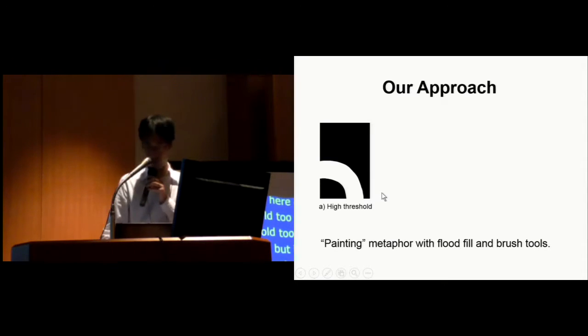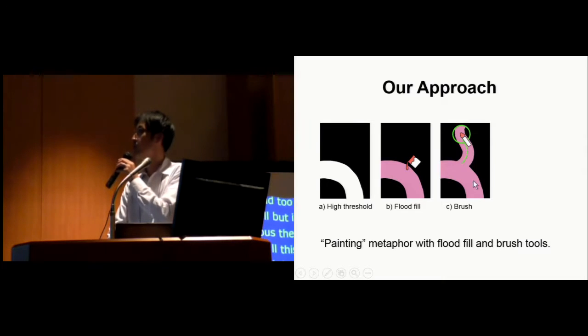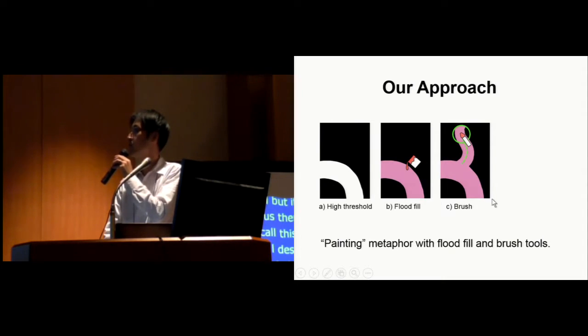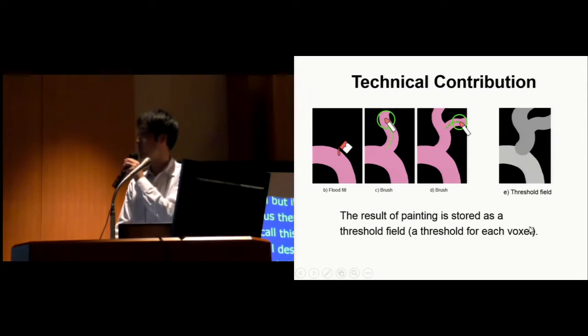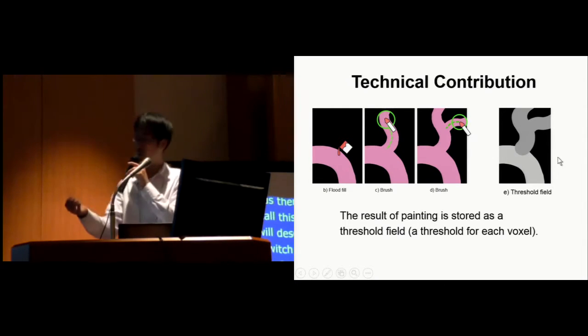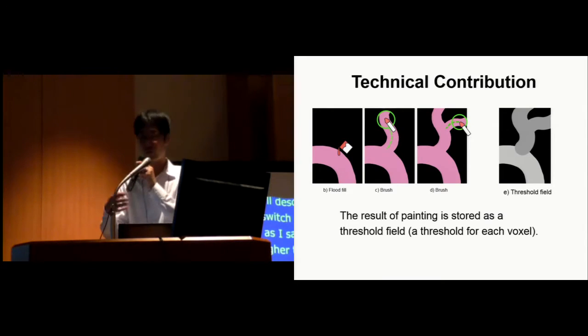As I said, what we do is like this. Set the higher threshold, and then apply flood fill to get here, and then if you want to apply different threshold, you pick a brush, and then locally change the different threshold. That's the result. And internally, what we do is actually painting a kind of threshold field. We assign different threshold value to each individual pixel, and then painting interface provides quick access, efficient access to this threshold field.